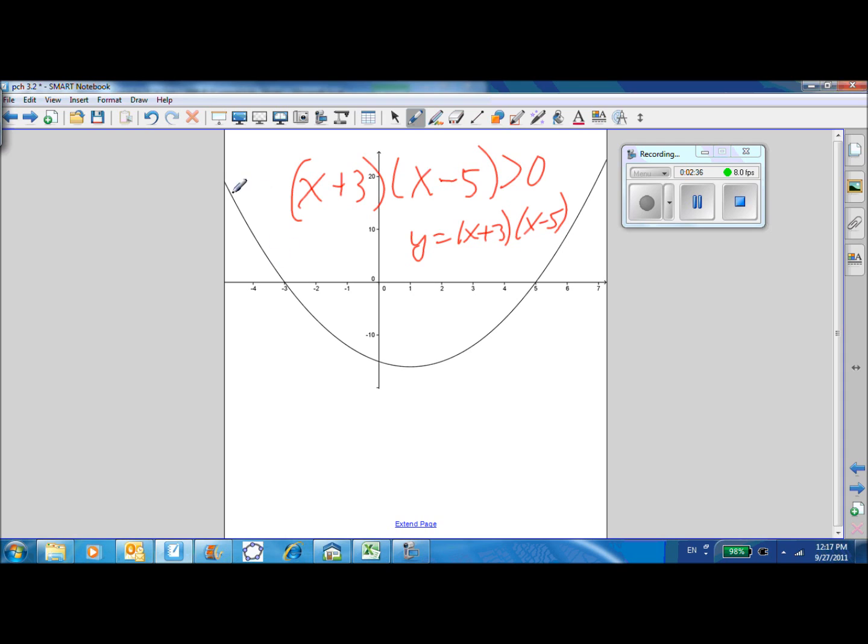The parabola will be positive out here. It'll be negative in here. So X plus 3 times X minus 5 is greater than 0 when we have X values to the left of negative 3 or to the right of 5. There's a nice quick visual answer. X is less than negative 3 or X is greater than 5.